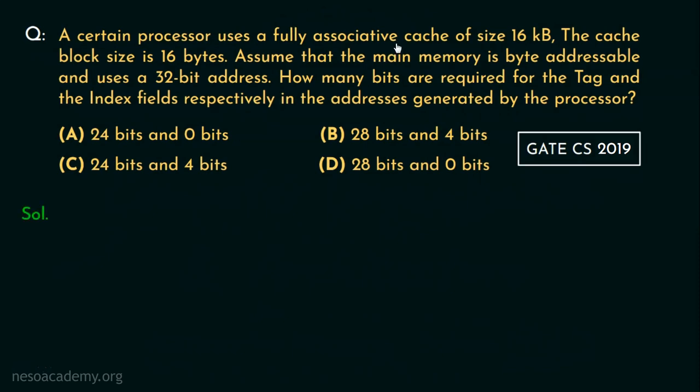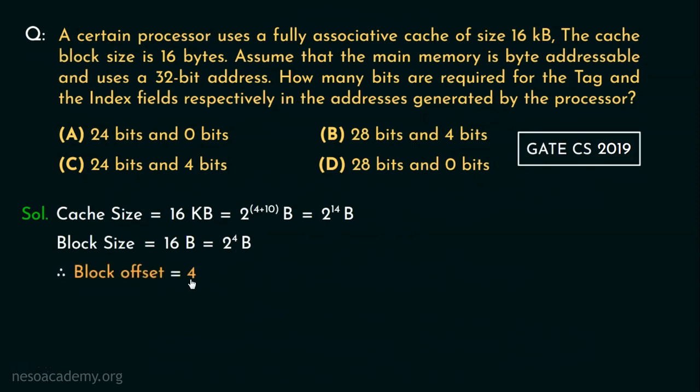The cache size is given as 16 KB which in terms of bytes is 2^14 because 16 is 2^4 and KB is 2^10, hence 2^14 in terms of bytes because it's byte addressable memory. We need to convert each unit to bytes. Now the block size is given as 16 bytes which can be converted into 2^4 bytes because 16 is 2^4. Therefore the block offset is 4 bits.